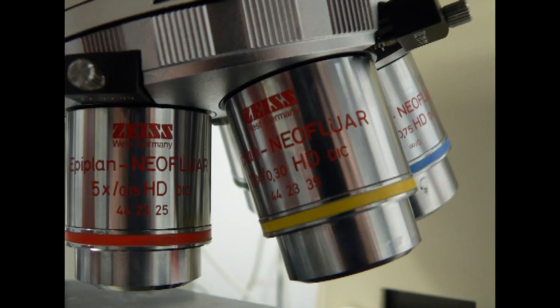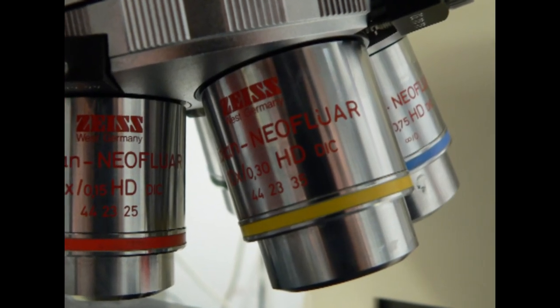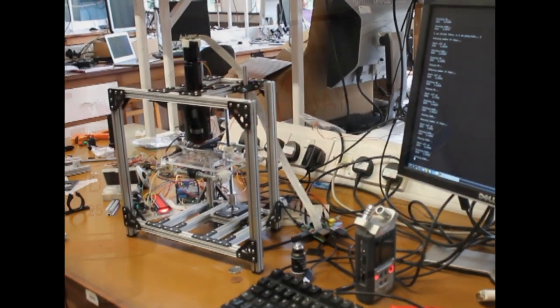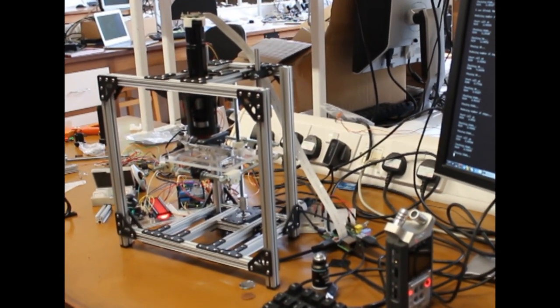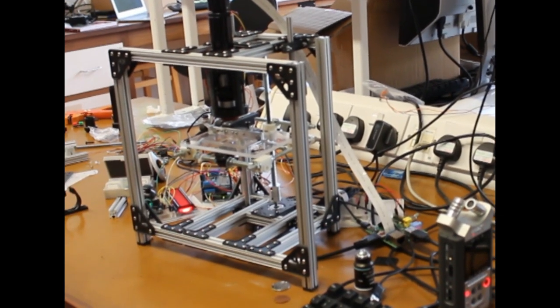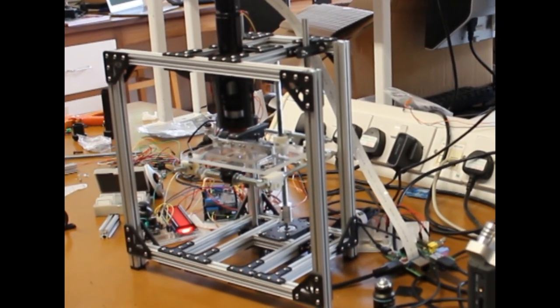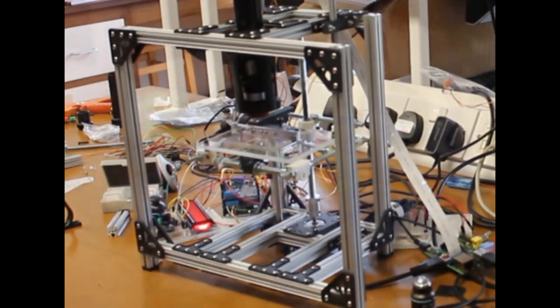One of the big problems with current microscopes is it's very expensive to buy all of the lenses and things that you need. So what I've been trying to do is buy very cheap lenses and put them together easily so that you can cheaply make a very high-quality microscope.